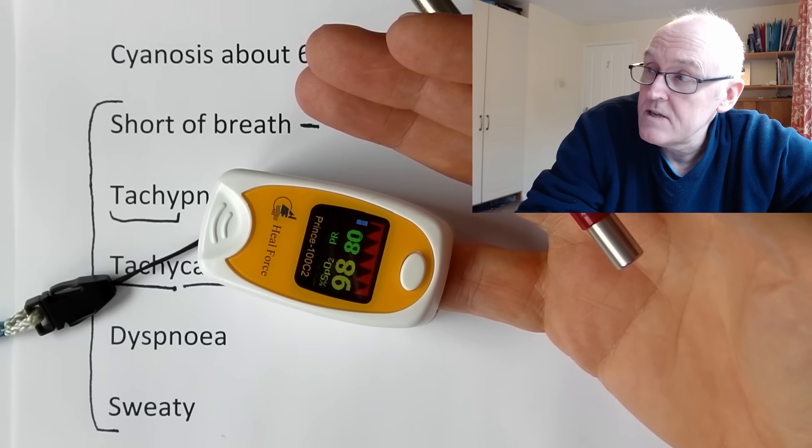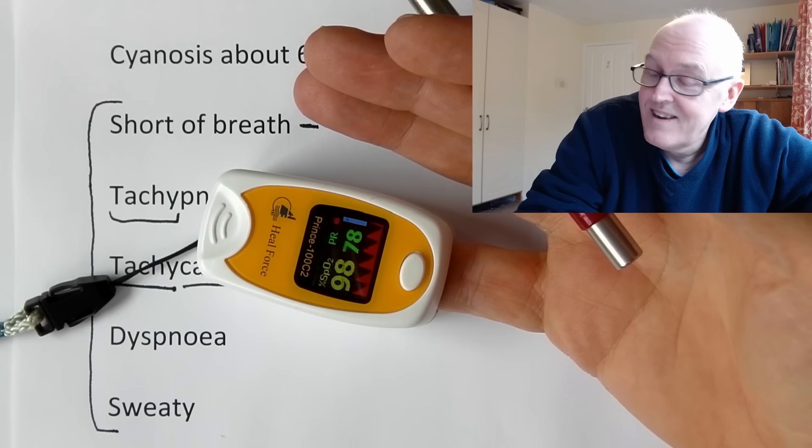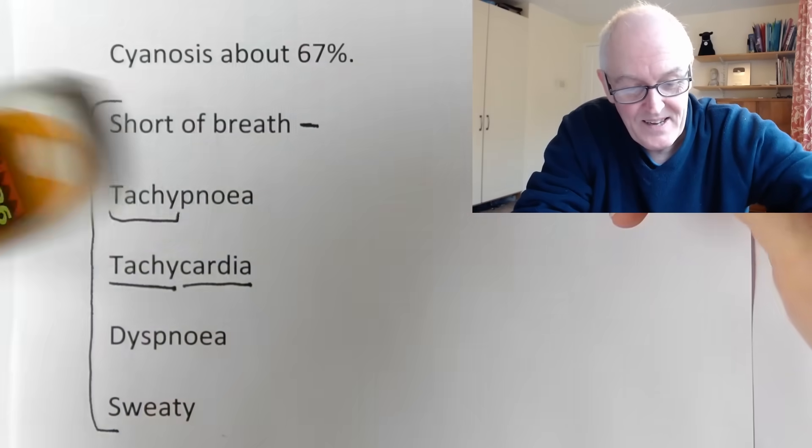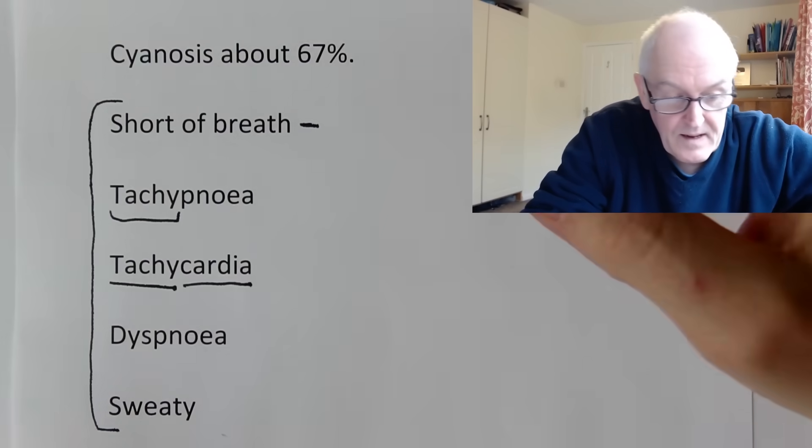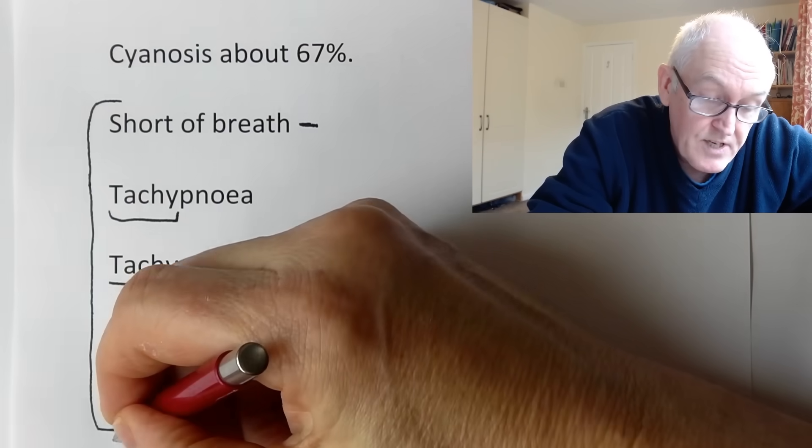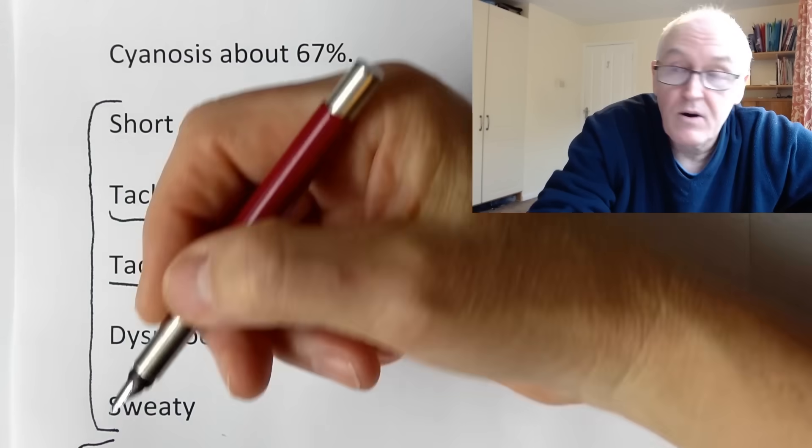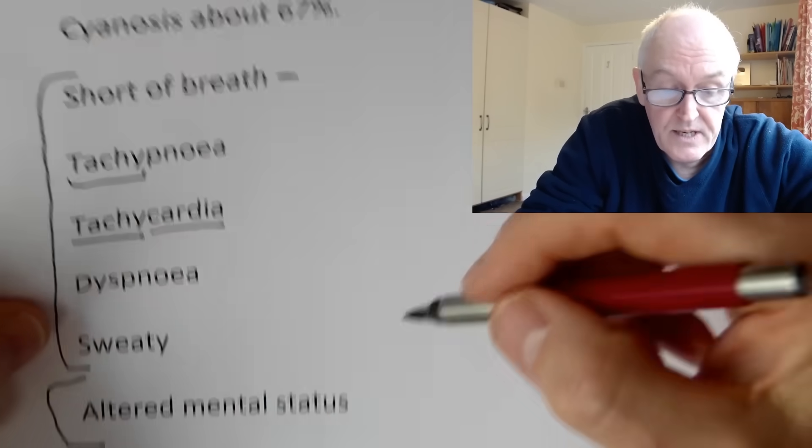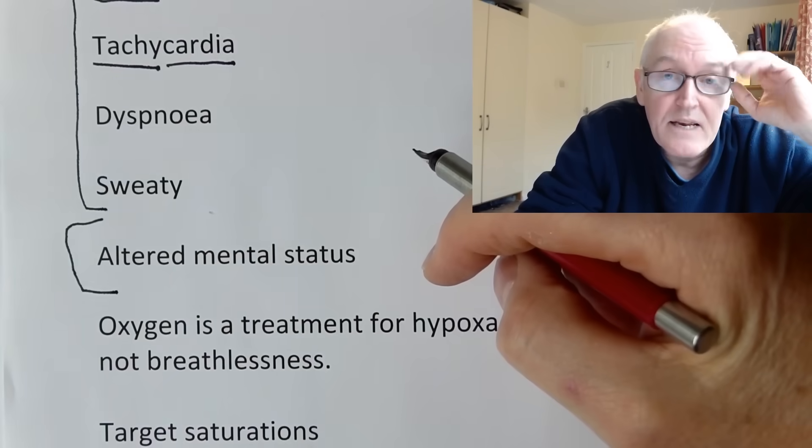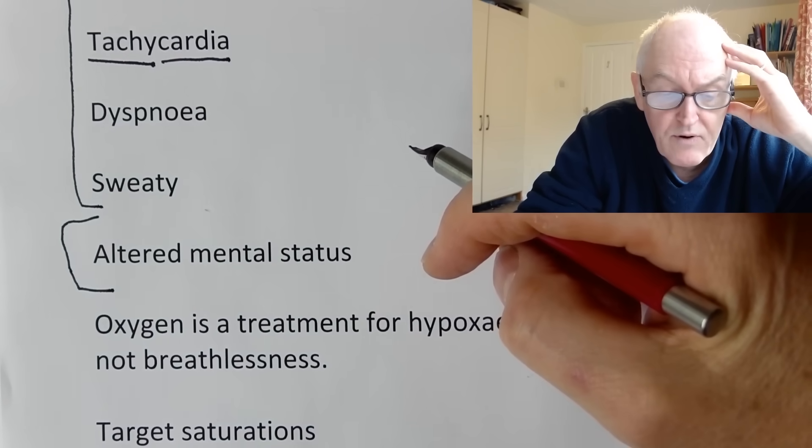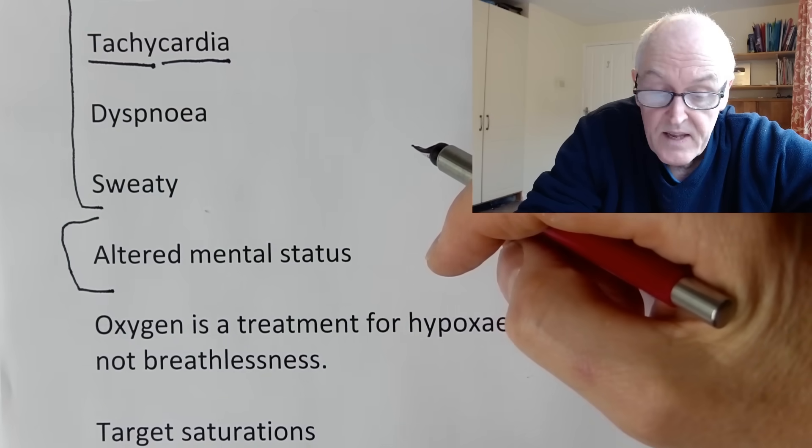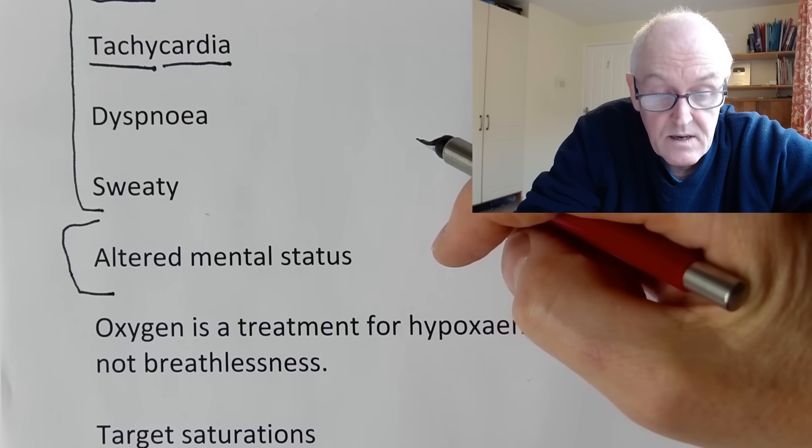Altered mental state is another one. When someone becomes very hypoxic, there's not going to be enough oxygen getting to their brain and their brain will not be working properly. They can be confused and eventually they can become unconscious.